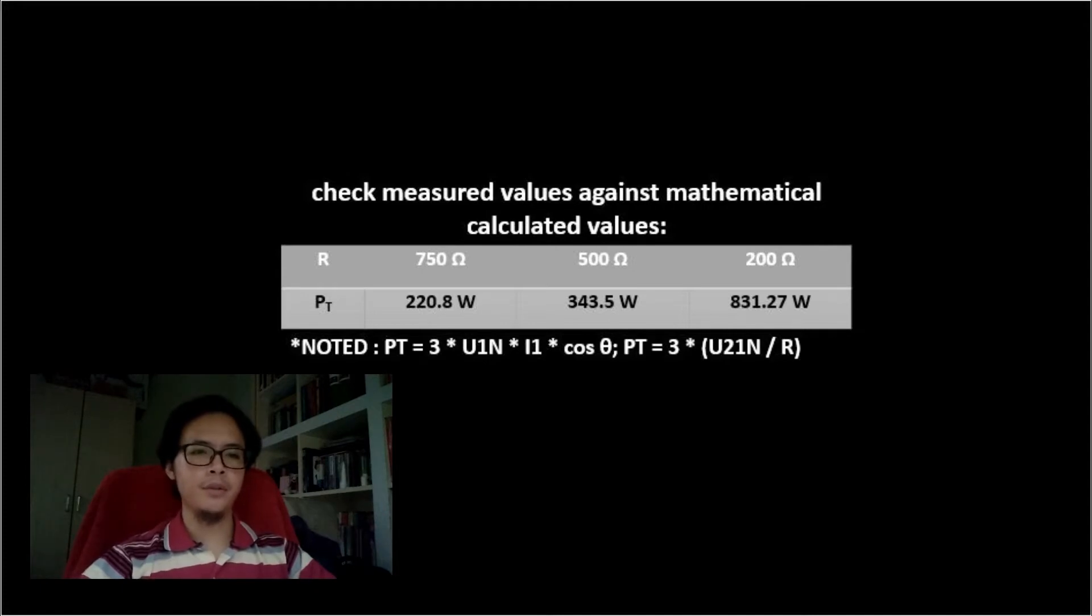The total power is also increased from 220 watts, 343 watts and 831 watts that we calculate by using the given formula. From this result we can conclude that the less value of resistance the more the current and the power will be.